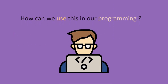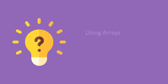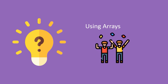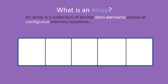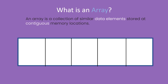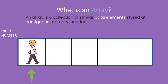As programmers, how can we use this in our programming? The answer is using arrays. In fact there are many ways to implement a queue, but let's use the easiest way. An array is a collection of similar data elements stored at contiguous memory locations. Now let's try to insert the people who were in the queue into the array.